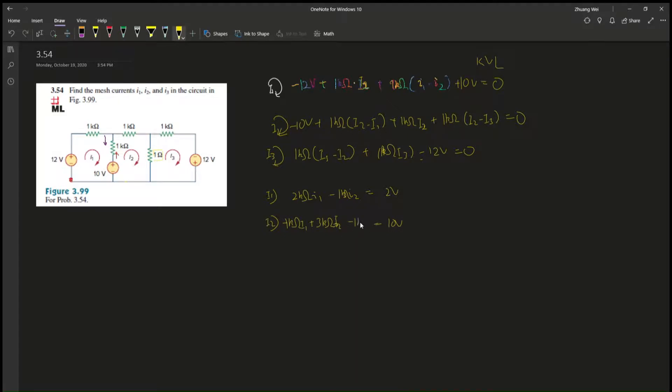Fantastic. And then the last one, i3. So we have i3 and i2, we don't have i1, okay? So negative 1k ohm i2 and then plus 2k ohm i3, right? And this whole thing gives us 12, because negative 12V equals zero.